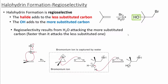Every new reaction we learn, we have to take into account both the regiochemistry and the stereochemistry. Since we're going to add two different groups to the double bond in this reaction, we need to be concerned with regiochemistry. The halogen will add to the less substituted position, and the alcohol will add to the most substituted position. When the bromonium ion is captured by water, the water will attack the more substituted carbon, which yields the alcohol on the more substituted carbon.